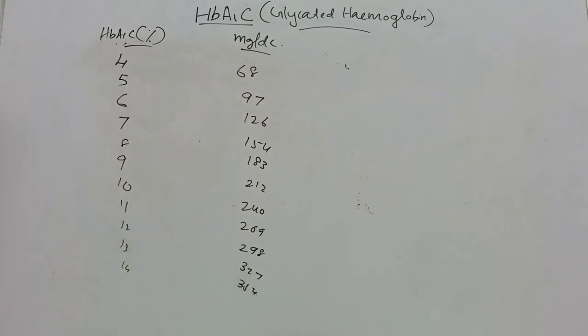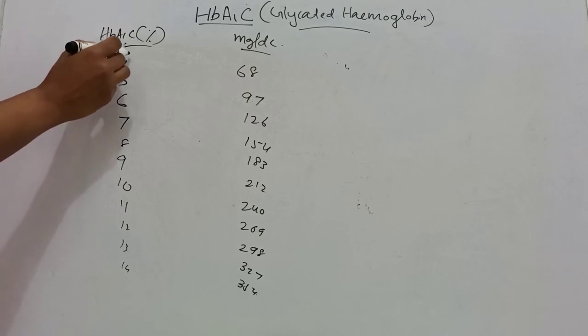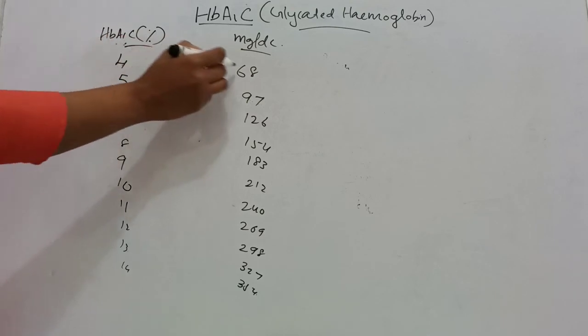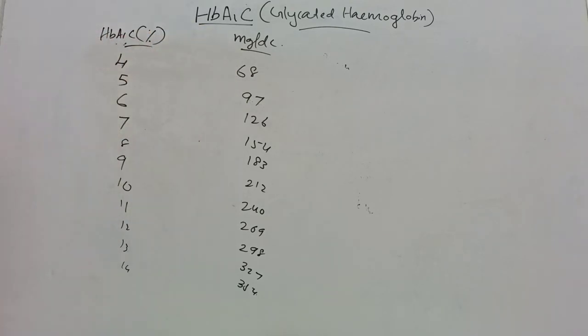These are the values. If HbA1c in percentage is 4%, then its blood glucose concentration will be 68 mg per dL.